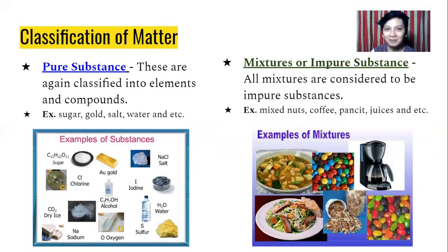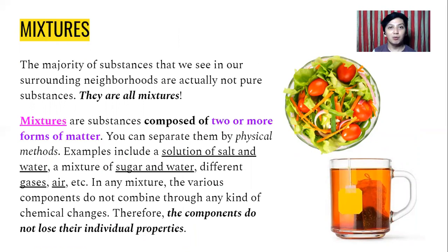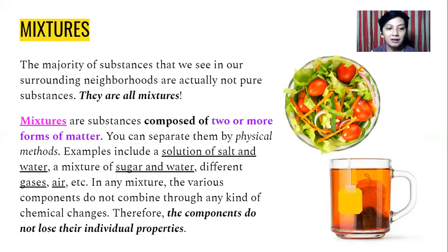The majority of substances we see in our surroundings are actually not pure substances — they are all mixtures. Mixtures are substances composed of two or more forms of matter. You can separate them by physical methods, using your hand or a tool. Examples include a solution of salt and water, a mixture of sugar and water, different gases, and air. In any mixture, the various components do not combine through any kind of chemical changes.